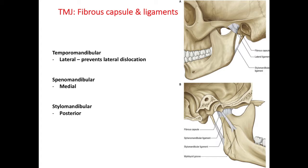The ligaments of the temporomandibular joint include the temporomandibular ligament, also known as the lateral ligament, which prevents lateral dislocation. A broad ligament reinforces the joint capsule laterally, attached above the articular tubercle on the root of the zygomatic process of the temporal bone. Two extrinsic ligaments also assist stability: the sphenomandibular ligament, running from the spine of the sphenoid to the lingula of the mandible, providing primary passive support; and the stylomandibular ligament, a thickening of the fibrous capsule of the parotid gland running from the styloid process to the angle of the mandible, which does not contribute significantly to strengthening of the TMJ.